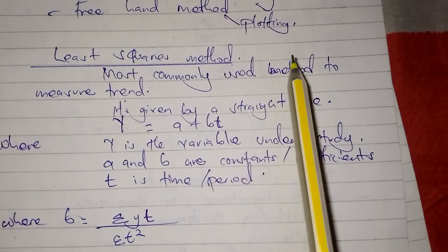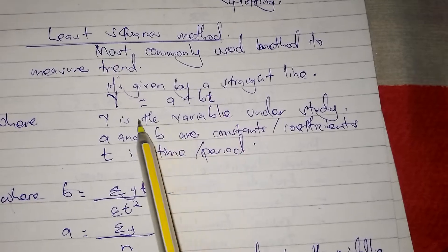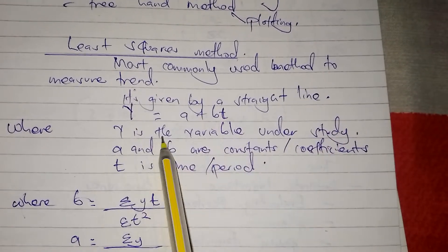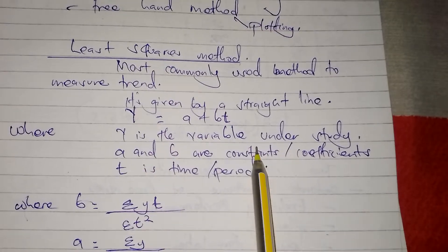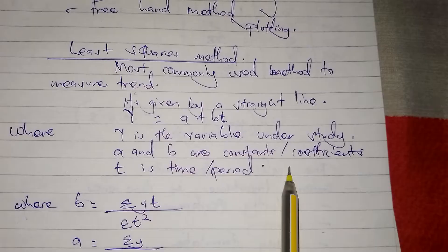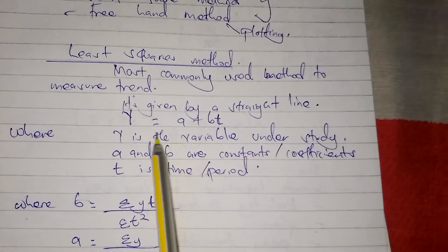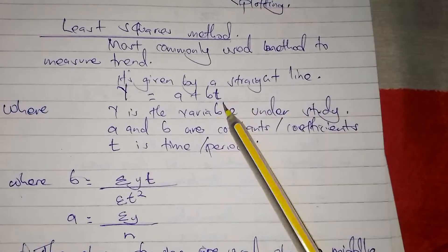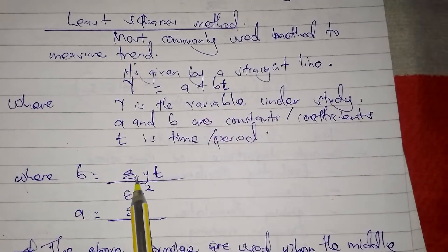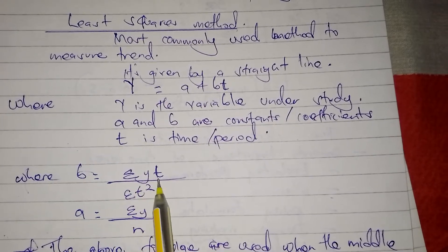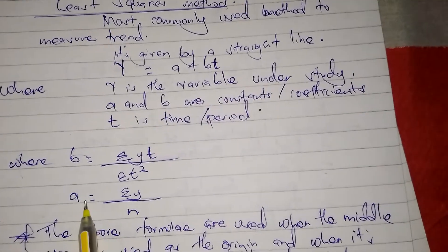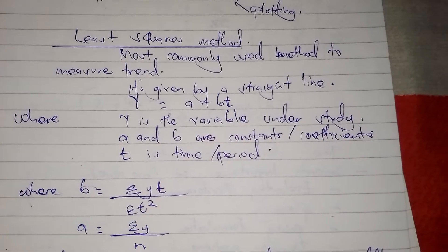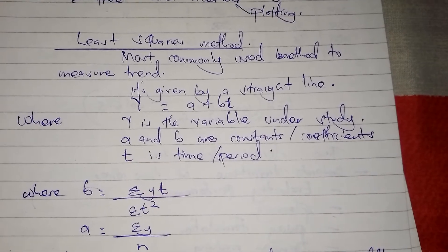The least squares method is the most commonly used method to measure trend. It is given by a straight line: Y is equal to a plus bT, where Y is the variable under study, a and b are constants or coefficients, and T is the time or period. We calculate for b using the formula: summation of YT divided by summation of T squared over n. We are going to have an example in the next video. Thanks for watching.